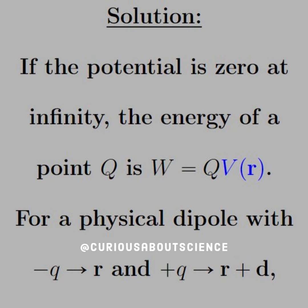What if the reference point wasn't at infinity? Here, we'll see both cases. The first, however, is for the physical dipole where negative Q is at R and positive Q is at R plus D.